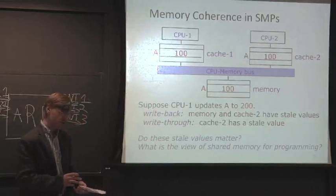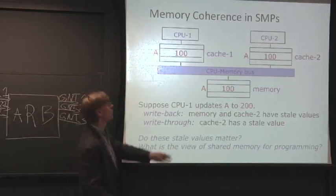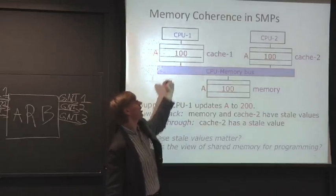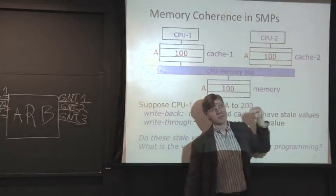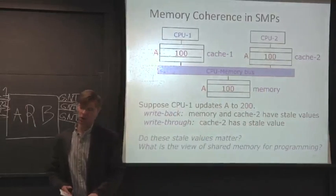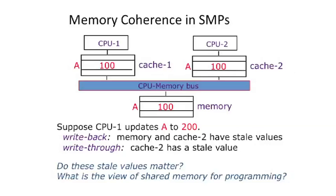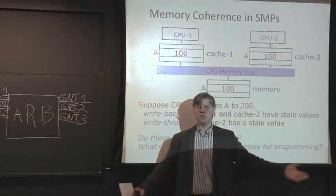What happens to the values in memory and in cache 2? All of a sudden, we have a stale value. The newest value is here at 200, but in memory and in cache 2, we have the old value. So if CPU2 tries to go read address A, it's going to continually just get the old value. Likewise, main memory has an out-of-date value.